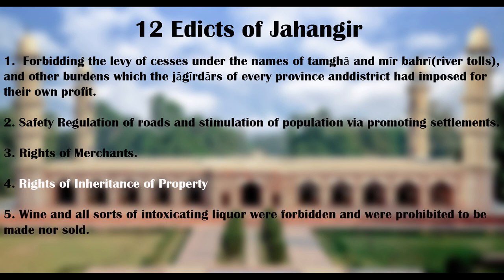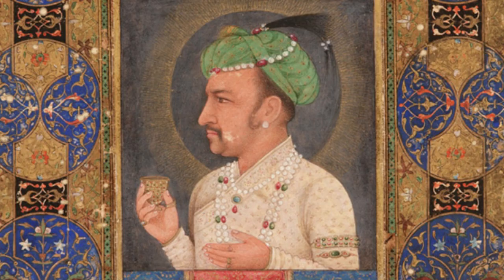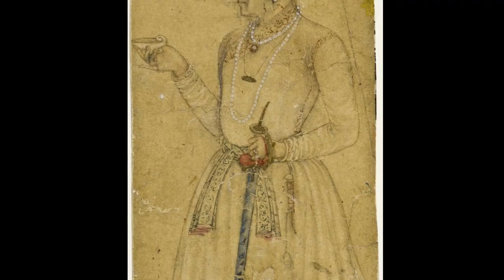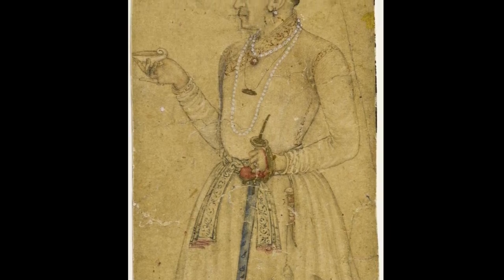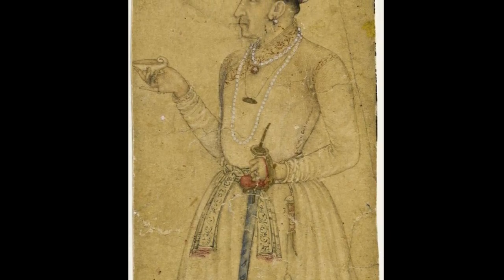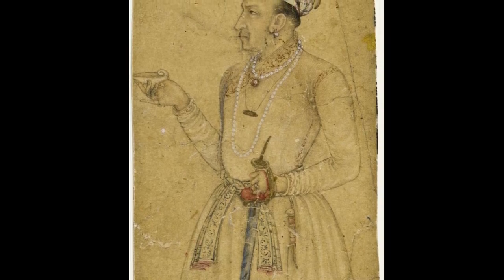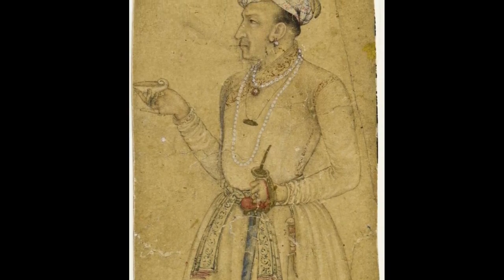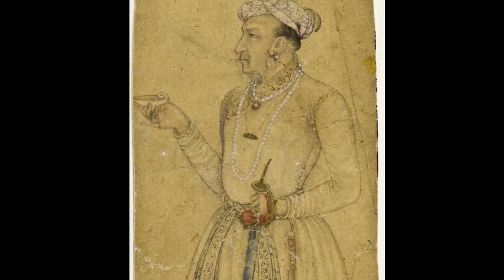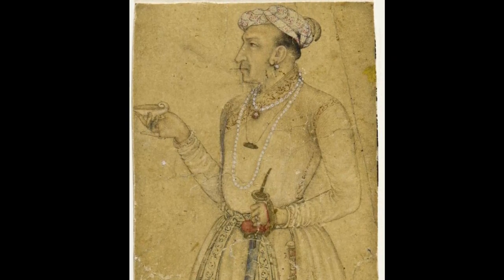5. Wine and all sorts of intoxicating liquor were forbidden and prohibited to be made or sold. Jahangir in his memoirs mentioned that he himself drank wine and had been an addict from the age of 18 till 38. He used to drink as many as 20 cups of double-distilled spirit, and when it started affecting him, he ventured to lessen the quantity from 15 cups to 5 or 6 per day. Jahangir claimed that after the age of 30 he drank only to digest his food. Thus, being aware of the consequences of drinking, he took this decision to keep his administration efficient and reliable.